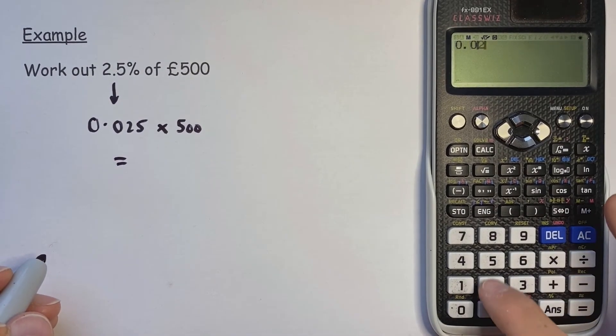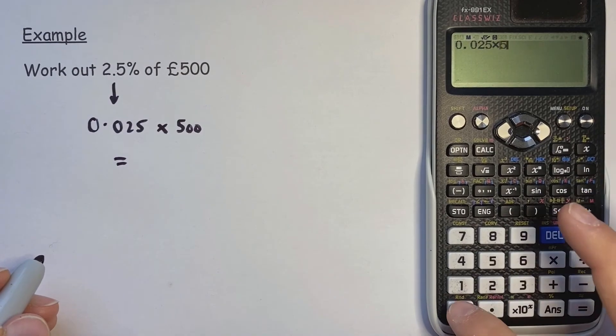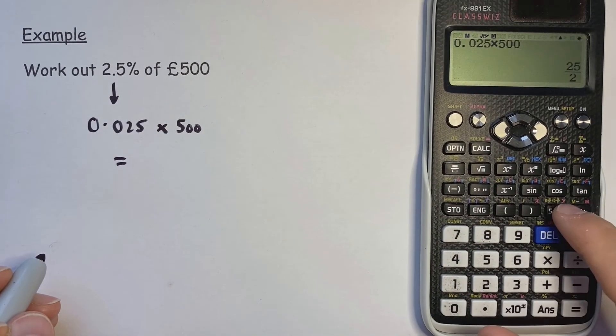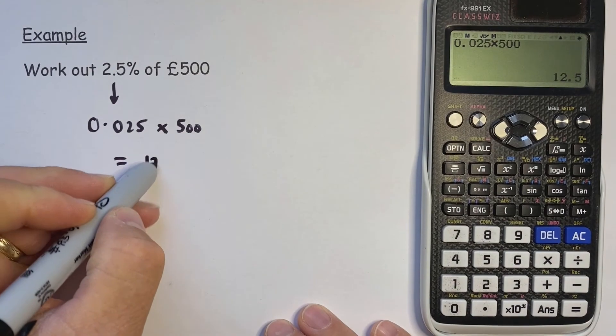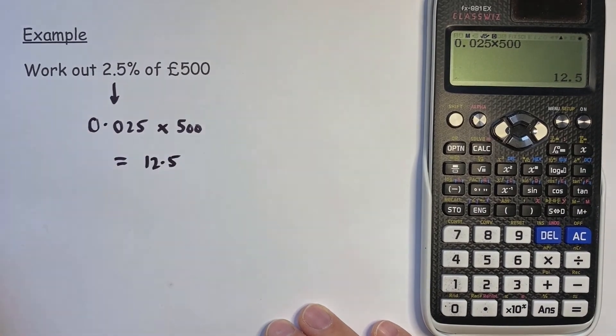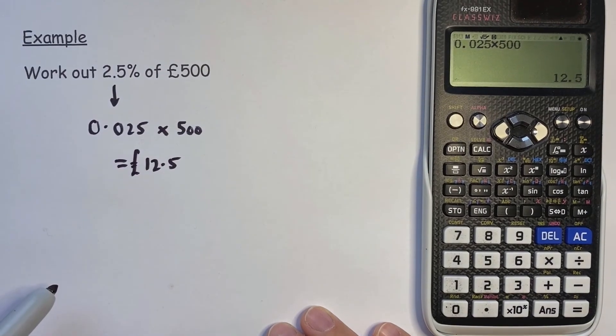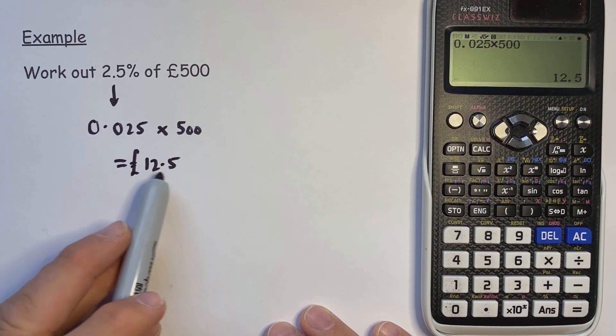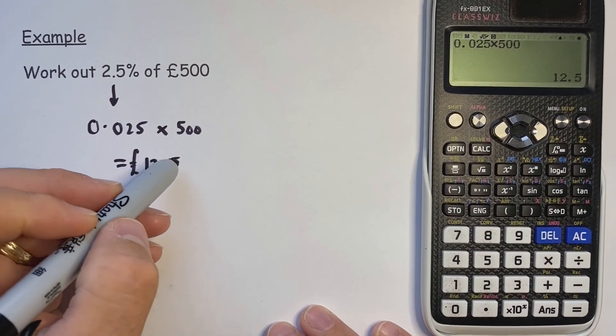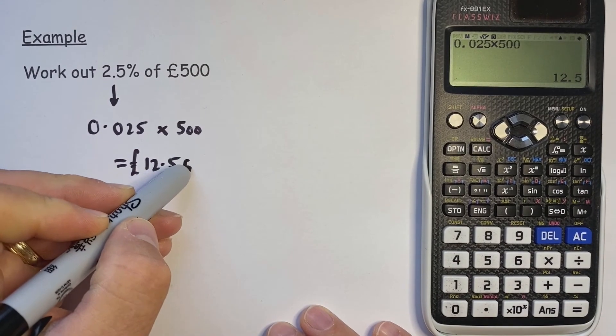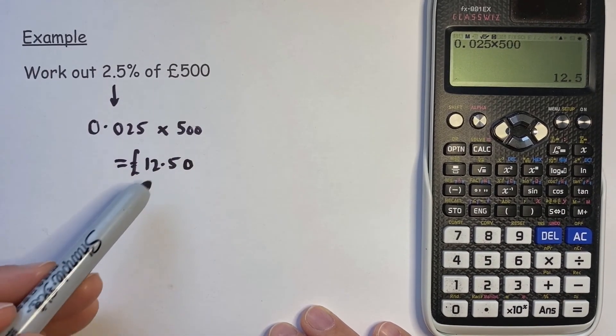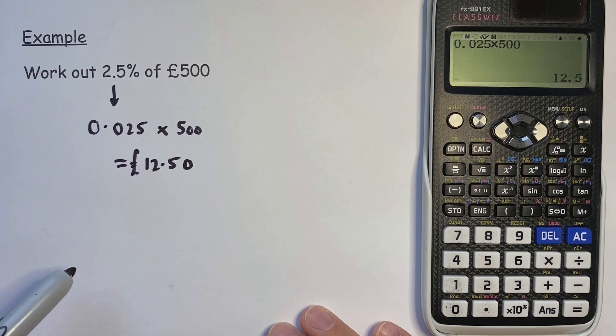So 0.025 times 500 equals 12.5. But this is money, so we need a pound sign. And you're never in a shock to see money presented like that. It's because the calculator doesn't realize that it's money. We need to put a zero on the end to acknowledge that that is 50 pence on the end.